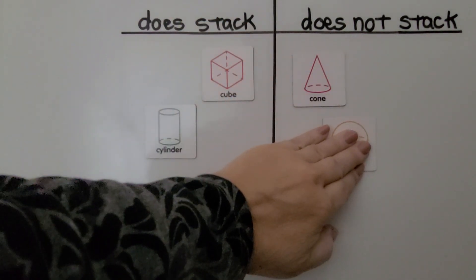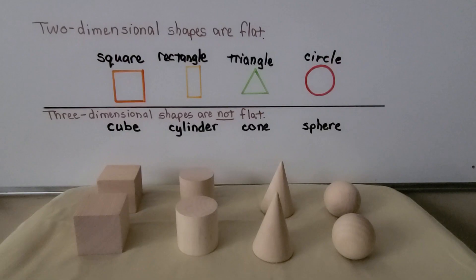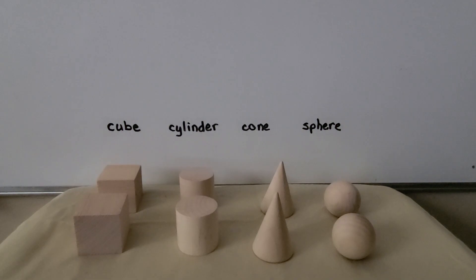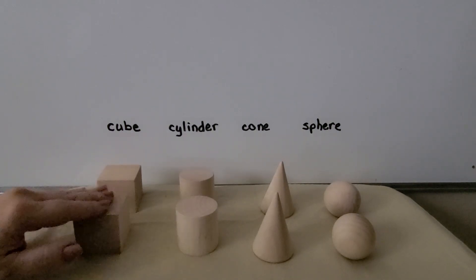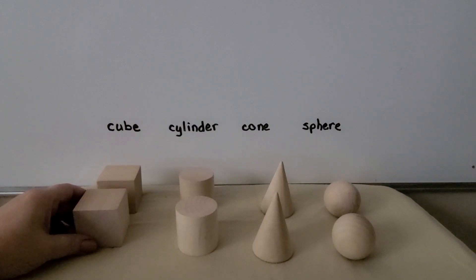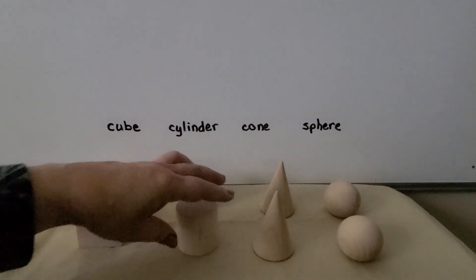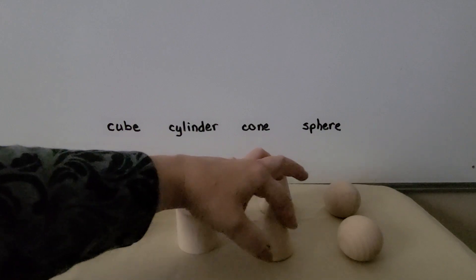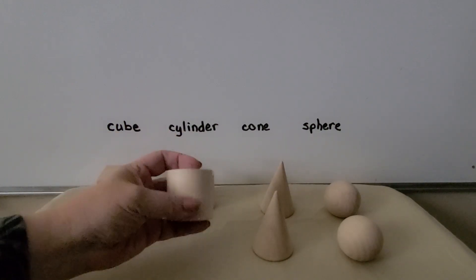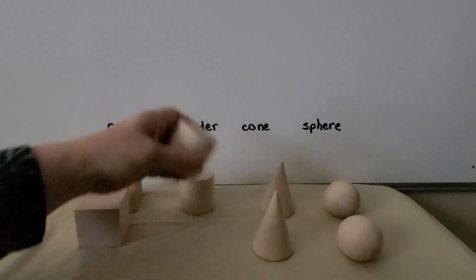So we made sets of three-dimensional shapes that stack and do not stack. We can sort three-dimensional shapes by whether they roll, if they roll and stack, or if they just stack. If a three-dimensional shape only has flat surfaces, then it just stacks. If it has a curved surface, then it can roll. And if it has a curved surface and a flat side on the top and the bottom, then it can roll and stack like a cylinder.